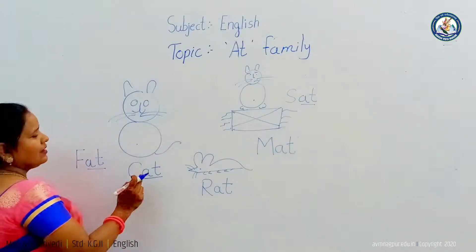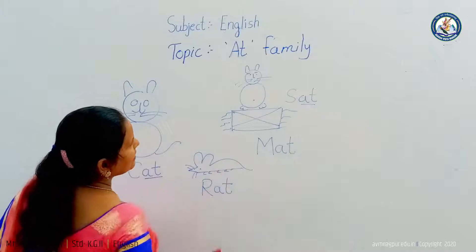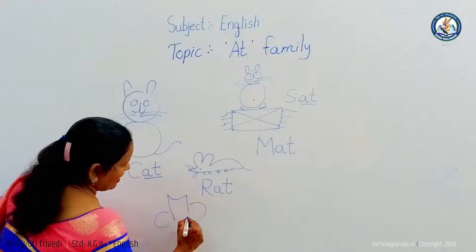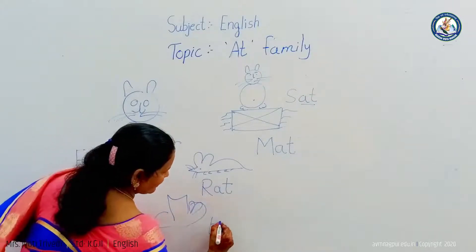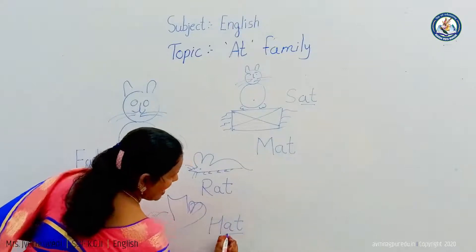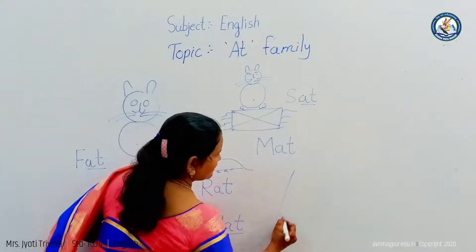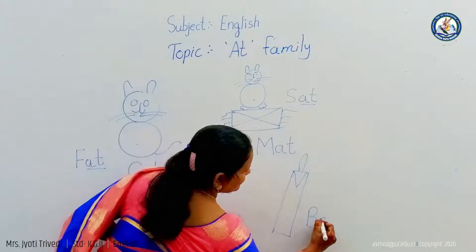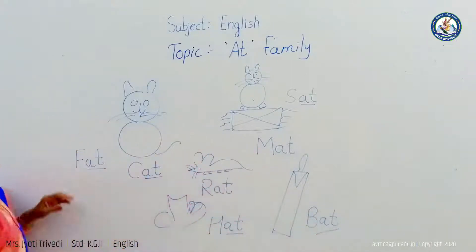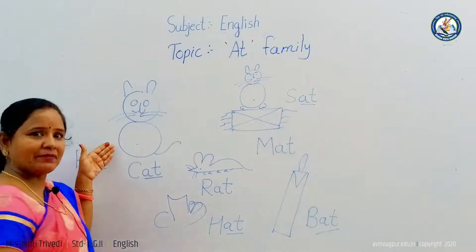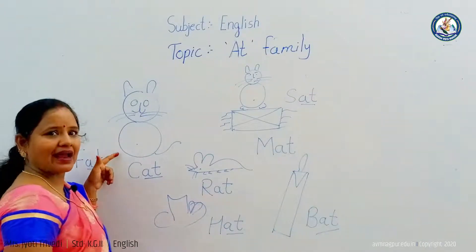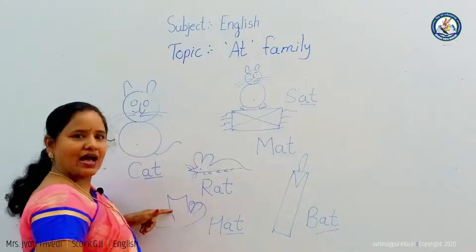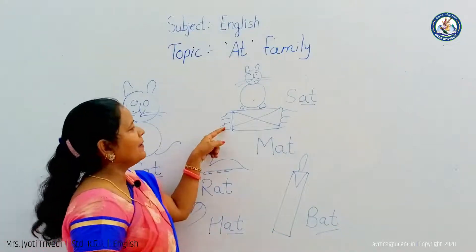F-AT: fat. C-AT: cat. R-AT: rat. M-AT: mat. S-AT: sat. The cat likes a hat. R-AT: rat. Rat means mouse. H-AT: hat. Hat means cap.